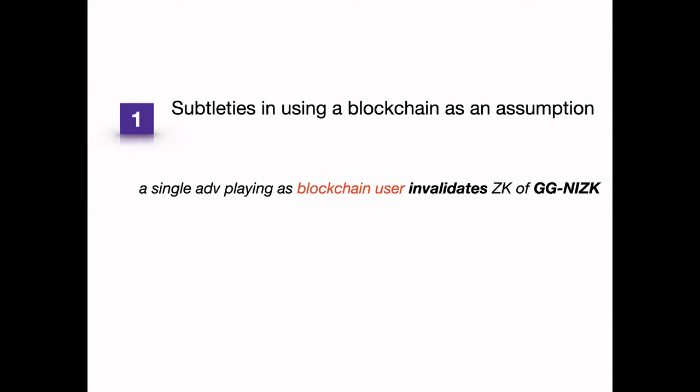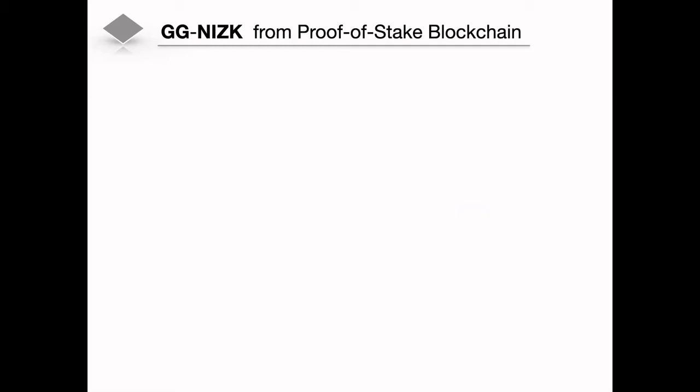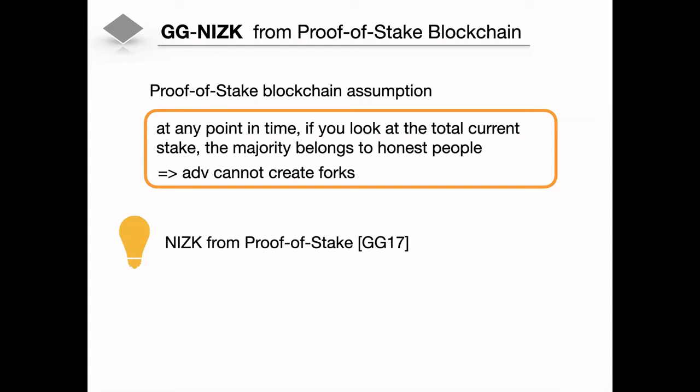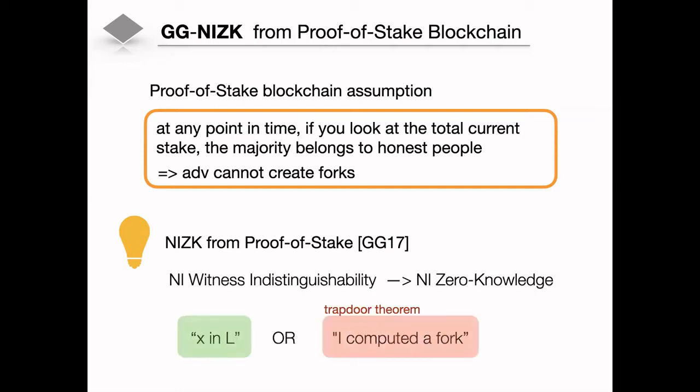The non-interactive zero-knowledge of Goyal and Goyal uses the proof-of-stake blockchain as a setup, which means this type of proof inherits all the assumptions of a proof-of-stake blockchain: that at any point in time, the majority of the stakes belongs to honest people, which means an adversary cannot produce a long fork in the blockchain. This is the key idea inside their construction, because they use a non-interactive WI and apply the FLS paradigm, which consists in proving that X is in L, or I know a trapdoor. In this case, the trapdoor is the knowledge of a long fork in the blockchain.